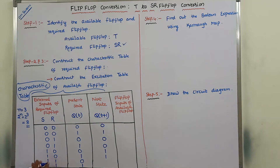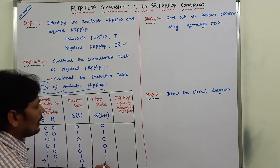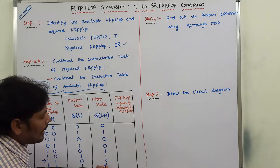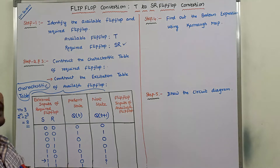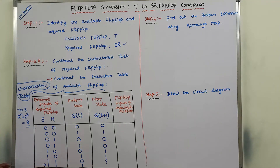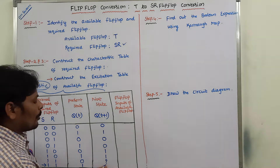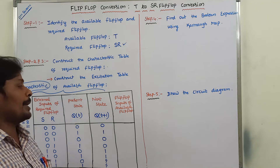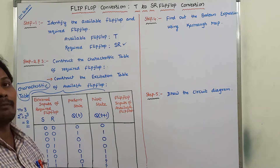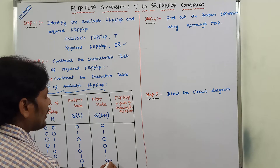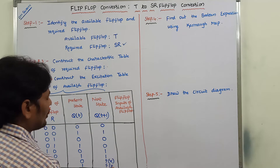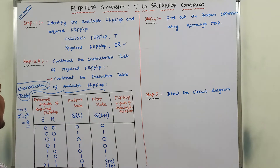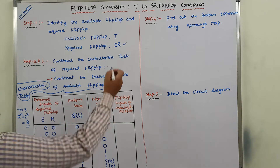The seventh row has S=1 and R=1, which is the invalid state, represented by a question mark. The last row also has S=1 and R=1, which is also an invalid state. Q(T+1) becomes invalid. This invalid state can also be represented as don't cares. This completes the characteristic table of the required flip-flop, which is the SR flip-flop.